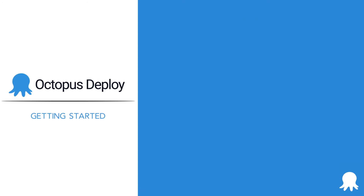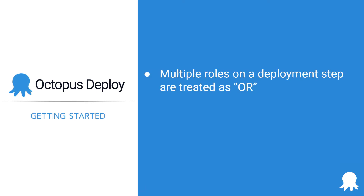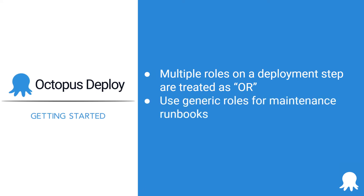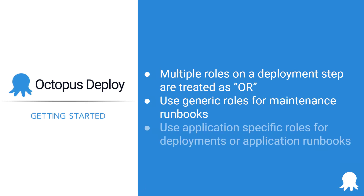Here are some tips to keep in mind while configuring roles in your Octopus Deploy instance: Multiple roles on a deployment step are treated as OR statements. Use generic roles such as a web server or application server for maintenance runbooks. Use specific roles such as Hello World UI for deployments and application runbooks.